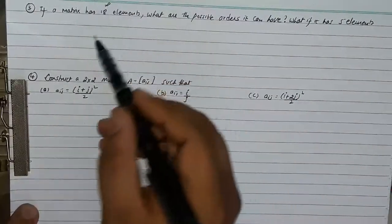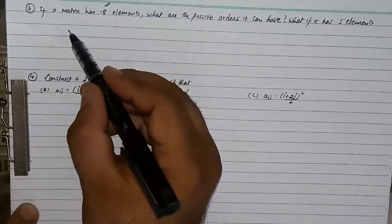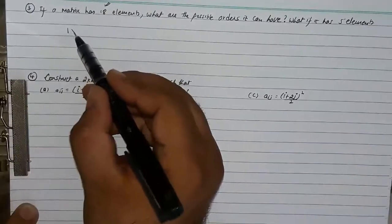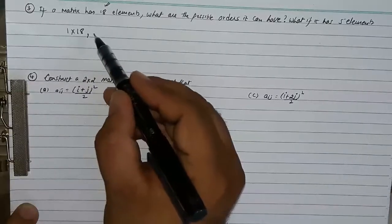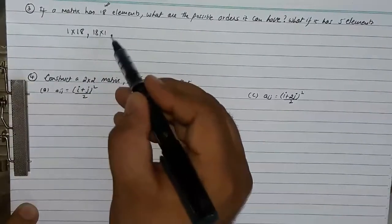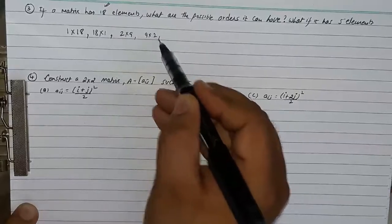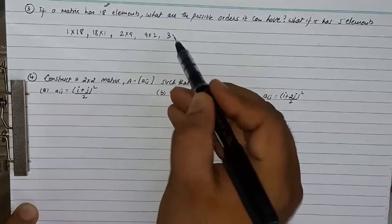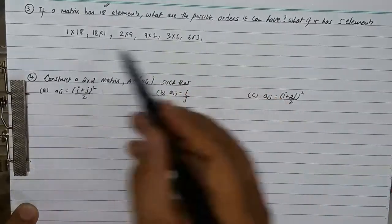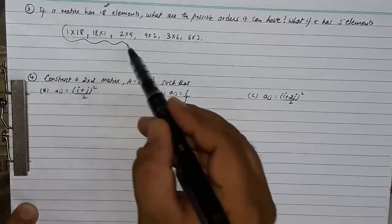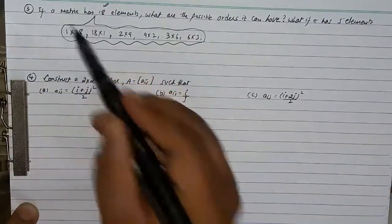In the third question, if a matrix has 18 elements, how can we arrange those 18 elements? We can arrange them as 1 into 18, 18 into 1, 2 into 9, 9 into 2, 3 into 6, or 6 into 3. These are the possible orders in which we can arrange those 18 elements.